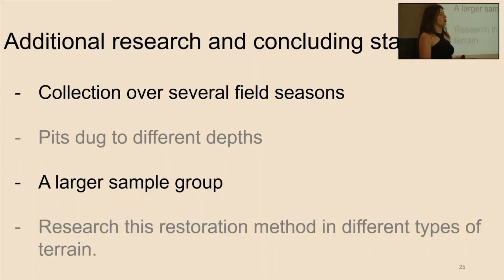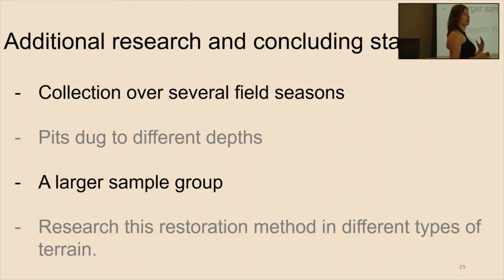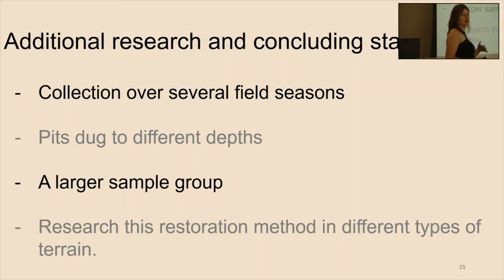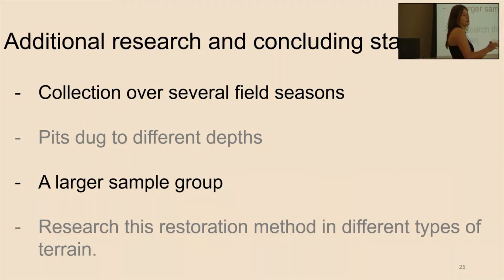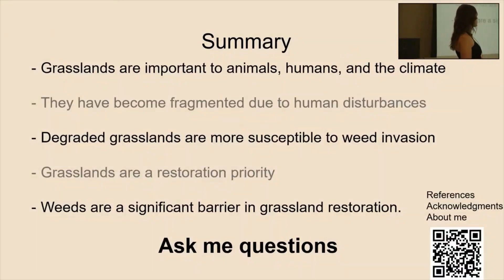Some additional research I would be interested in is collection over several field seasons, which will give us a better understanding of our results to account for weather changes like the rainy season we had. I'd also be interested to know about pits dug to different depths, because a lot of the research done on the soil seed bank is only up to 10 centimeters but it can go down to 80 centimeters. A larger sample group would give more information, and I'd also like to see this done in different types of terrain since we were on a slope — to see what it looks like in the mountains or in flat land to increase soil moisture and heterogeneity. This is just a brief summary — are there any questions?